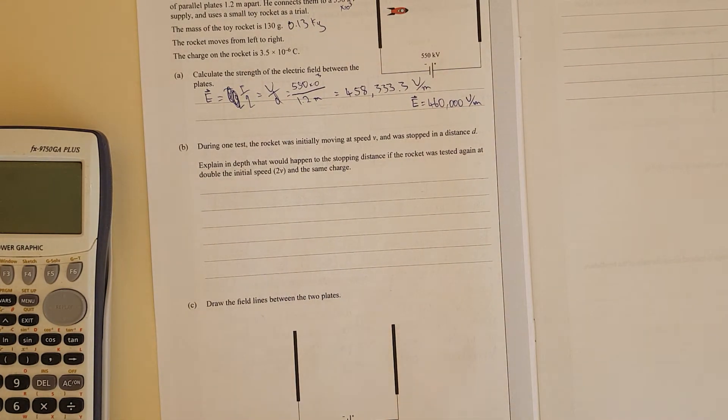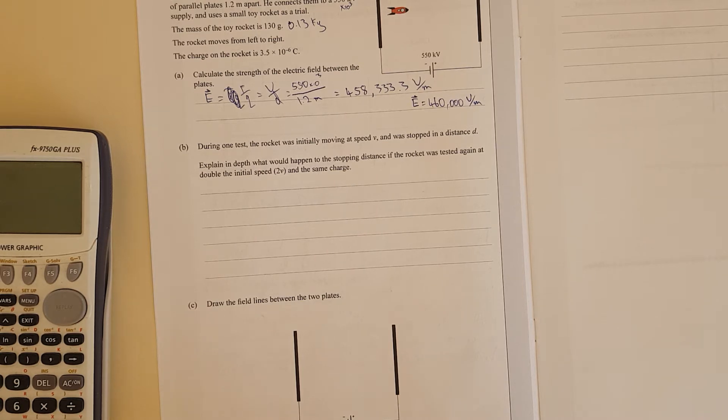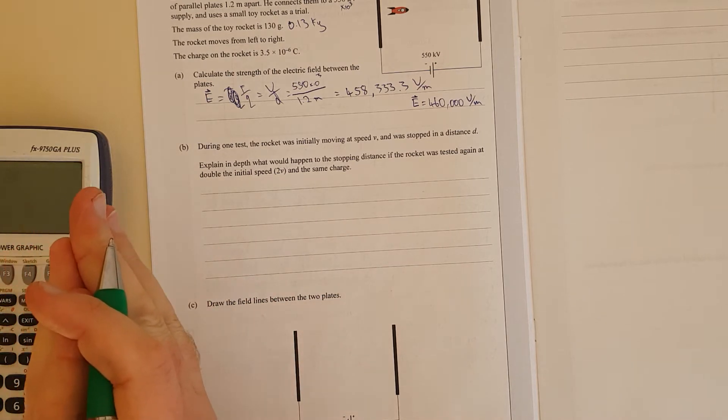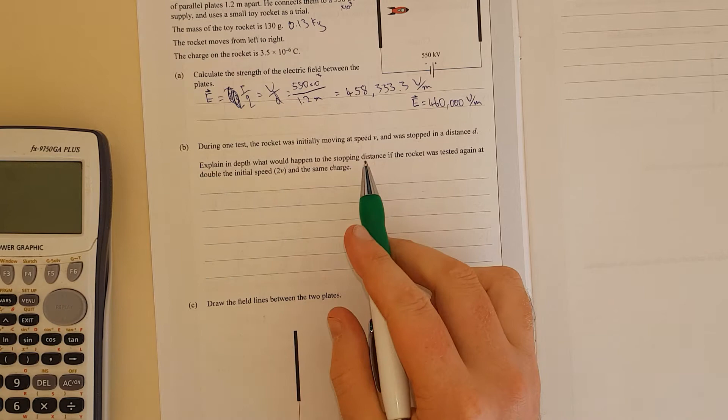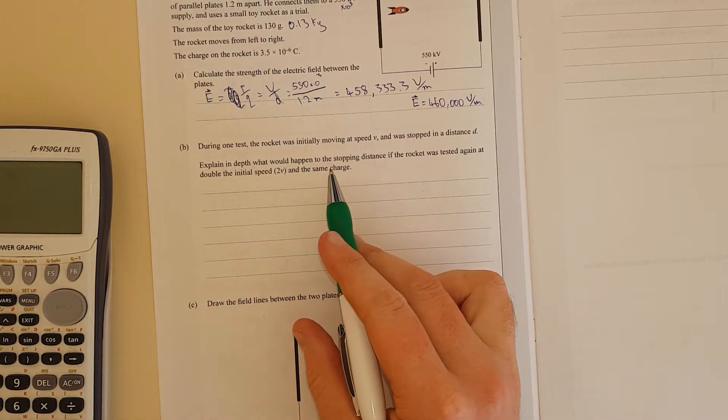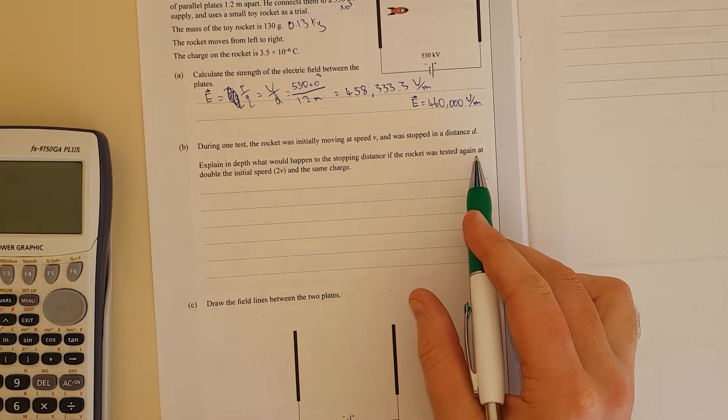During one test, the rocket was initially moving at speed V and then it was stopped in distance D. Explain in depth what would happen to the stopping distance if the rocket was tested again at double the initial speed in the same charge. So it's had kinetic energy and it's getting slowed down by electric potential.